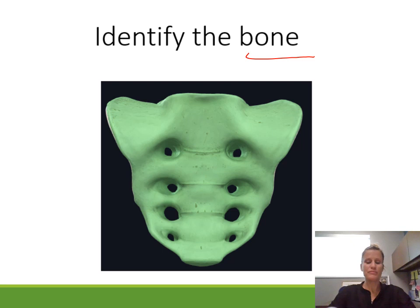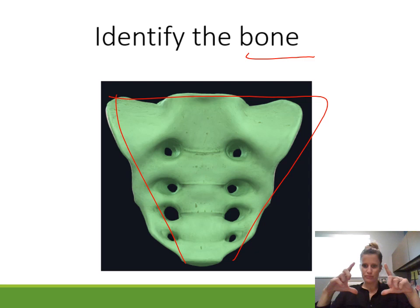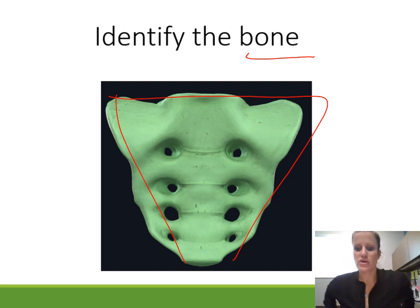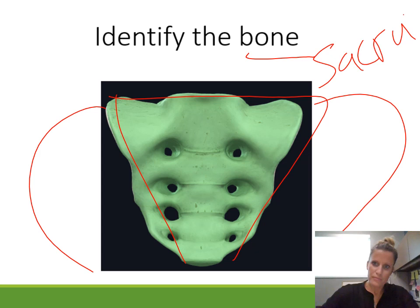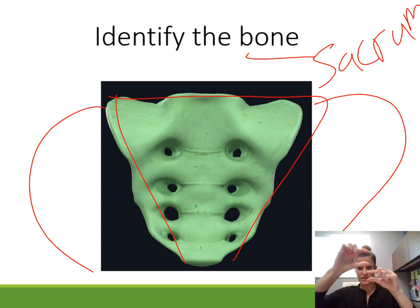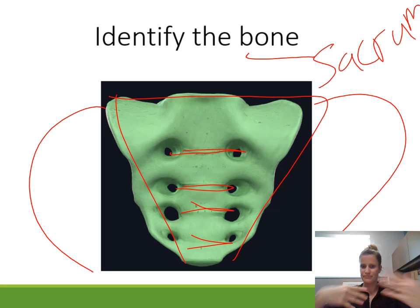Identify the bone. This is the triangular-shaped bone at the bottom of the spinal column — after cervical, thoracic, and lumbar vertebrae comes this. It also forms the back of the pelvis. This is the sacrum. When the baby is developing, these are actually separate bones — separate sacral vertebrae — but they all fuse together. You can see the lines where they were separate and fused.